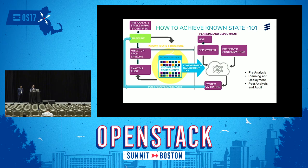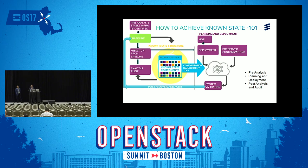In the pre-analysis phase, we identify a stable infrastructure for creating a baseline for the deployment. Once the stable infrastructure is identified, we capture the data from the infrastructure. We can capture the data through configuration management tools like Ansible, Puppet, or data collection tools like Foreman. Once we collect the data, we do an analysis and based on the analysis we finalize the baseline.